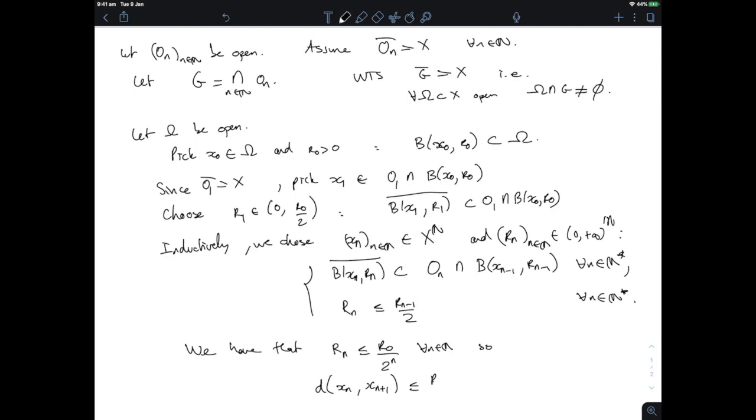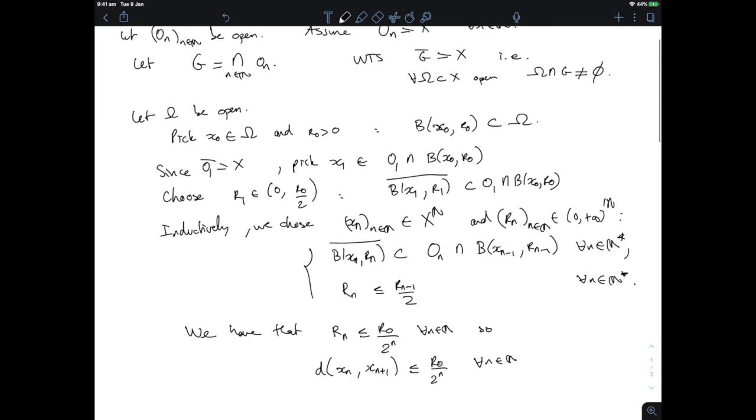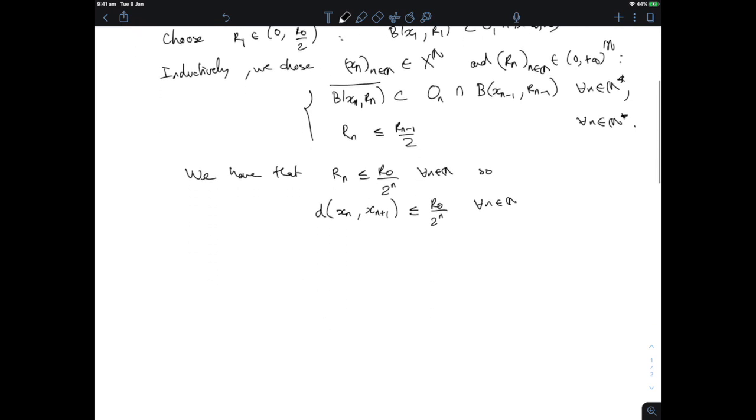So the distance, denoting by d the distance in my metric space, between xₙ and xₙ₊₁ is always going to be smaller than r₀/2ⁿ, because my xₙ₊₁ is in the ball centered at xₙ of radius rₙ, and rₙ is smaller than r₀/2ⁿ. That's for all n.